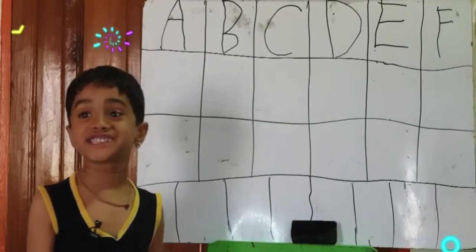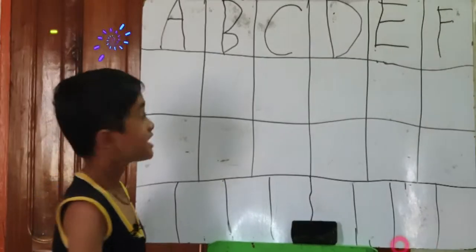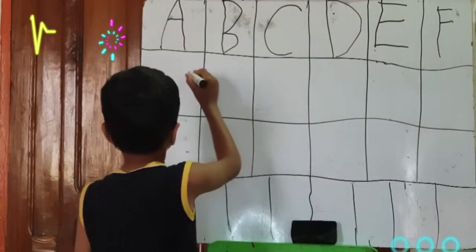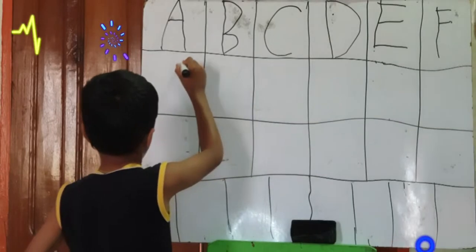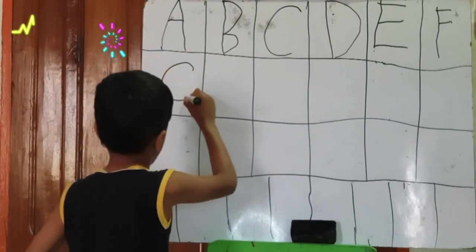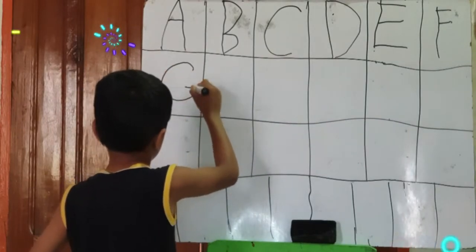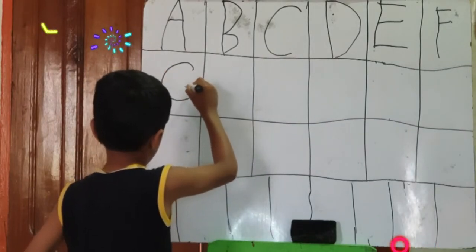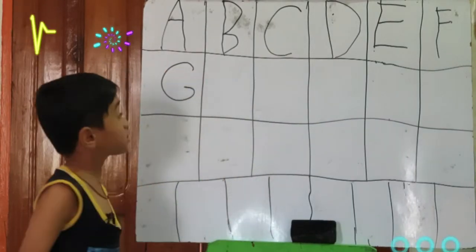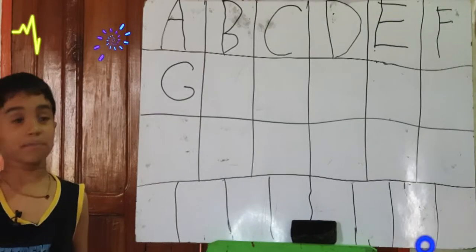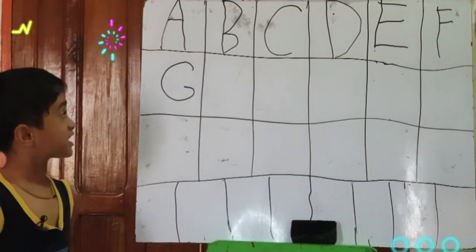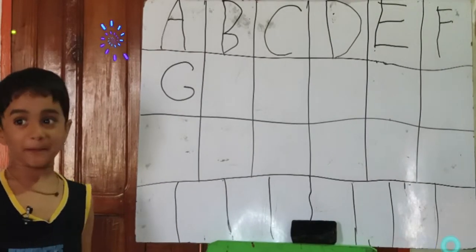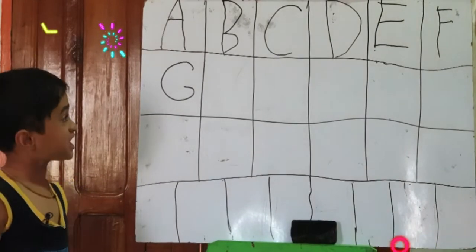Now we are going to learn G. One half curve and a short sleeping line. That makes G.